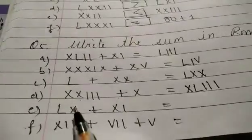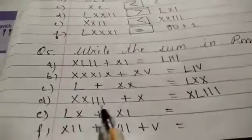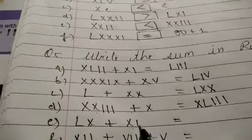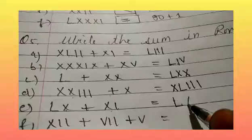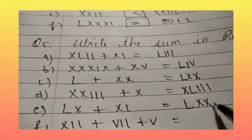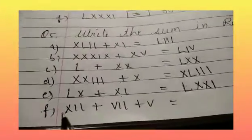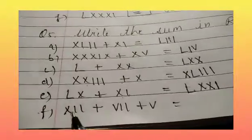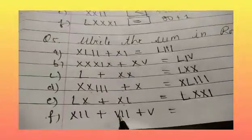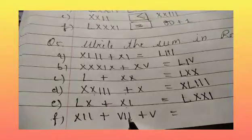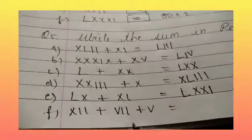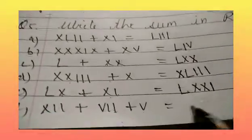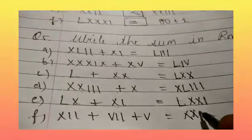Now part E. 50 plus 10 is 60 plus 10 plus 1 is 11. So 60 plus 11 is 71. L is 50, 60, 70 and 1. 71. So F is 10 plus 1 plus 1 is 12 plus 5 plus 1 plus 1 is 7 plus 5. So 12 plus 7 plus 5 is 24. So we will write 10 plus 10 plus 4 is 24.